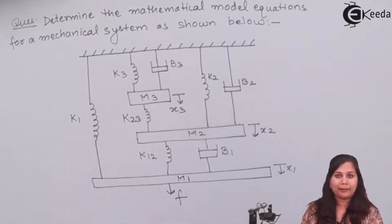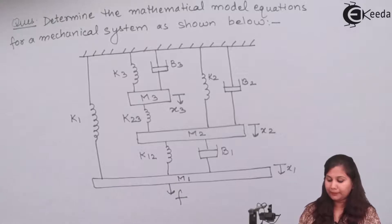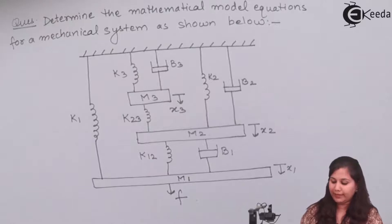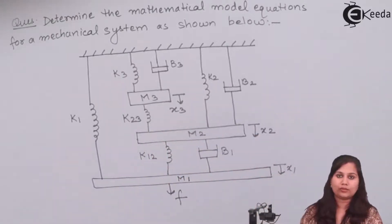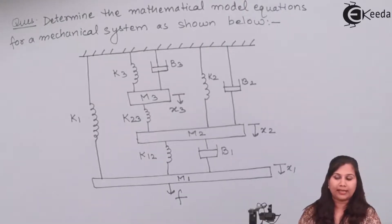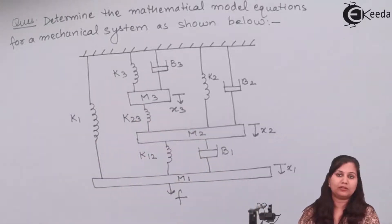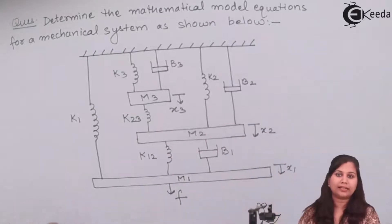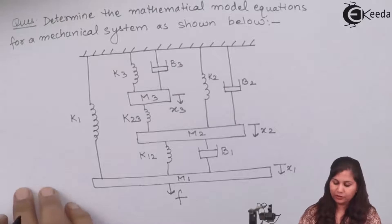To determine the mathematical model, we first draw the nodal diagram. In the nodal diagram, the three displacements are taken as the three nodes. We draw the reference line, and all elements connected between the nodes or associated with these displacements are connected through the nodes.